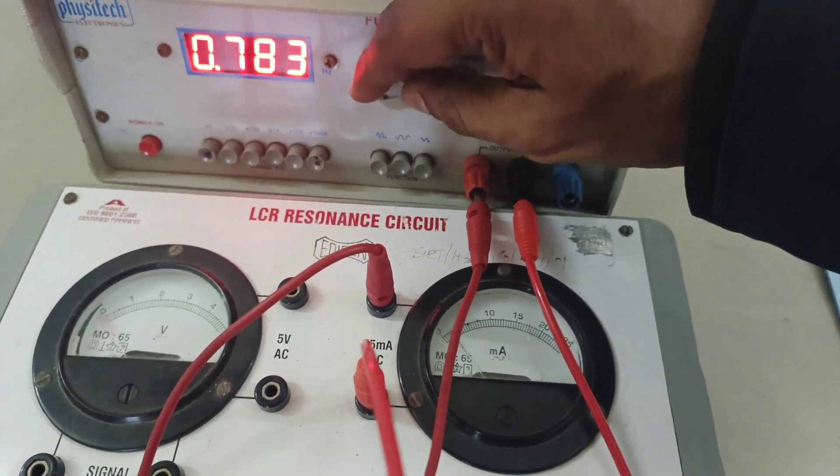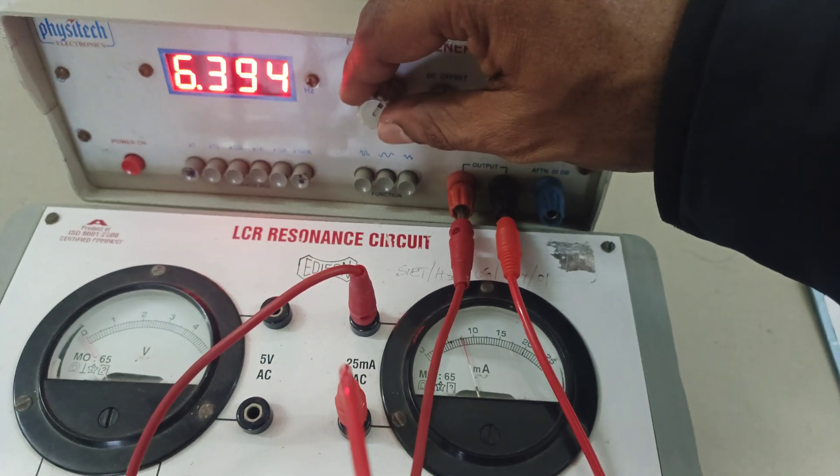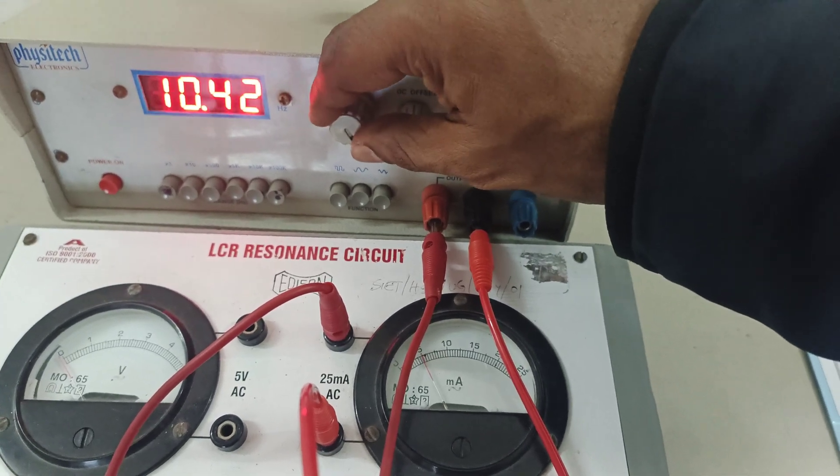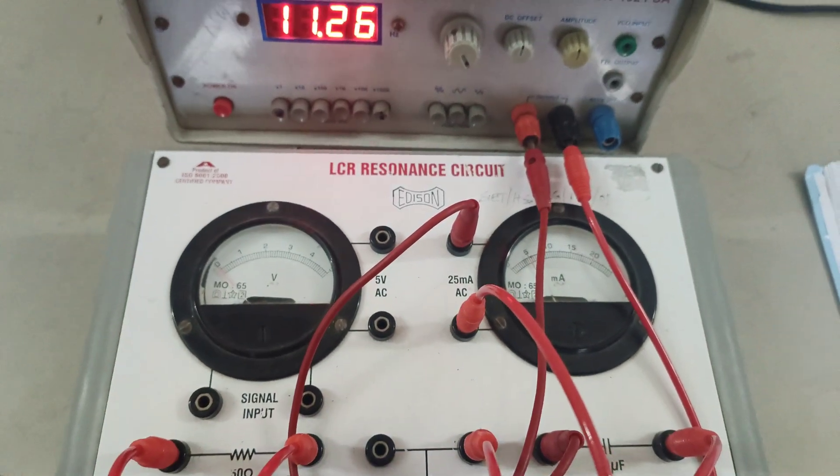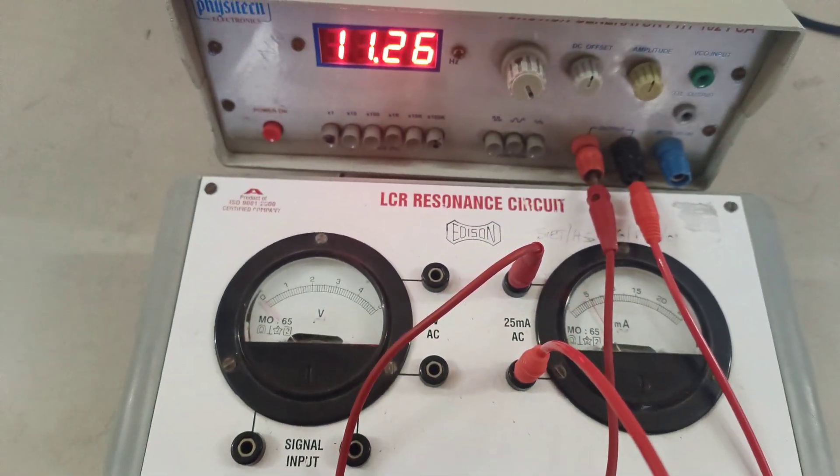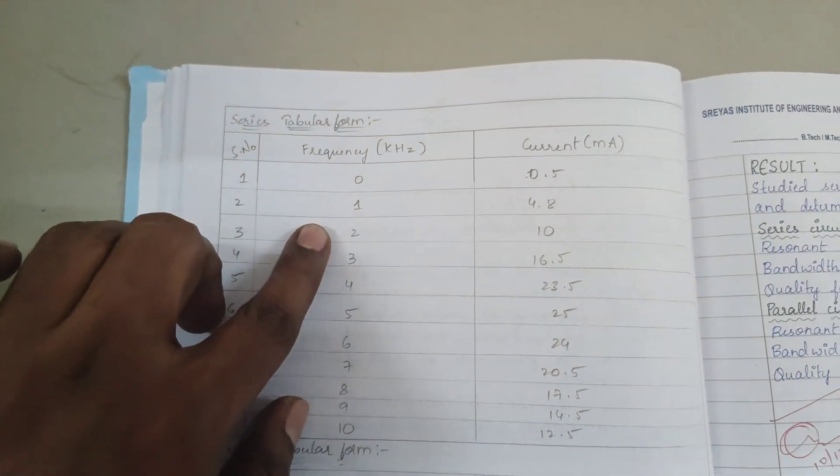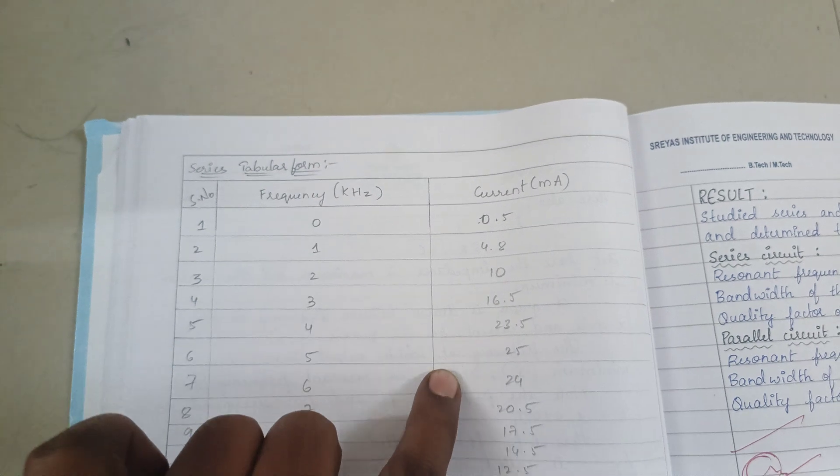You can observe it increases. At five volts it's getting reversed. These are the readings: one kilohertz, two kilohertz, three kilohertz. You have to note down all the readings.